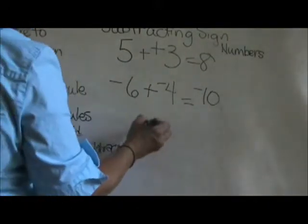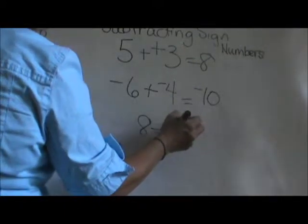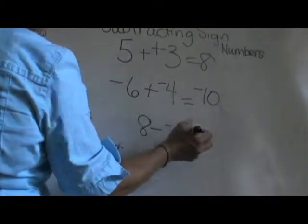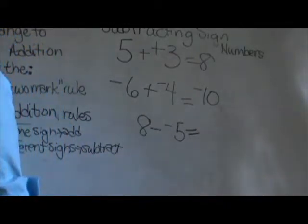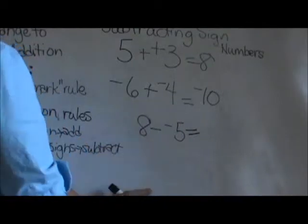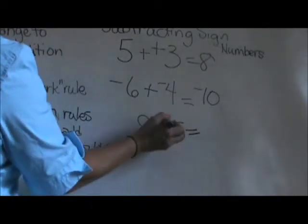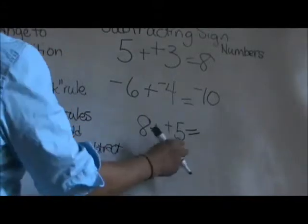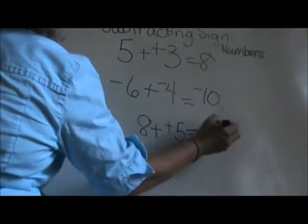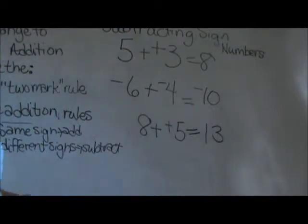Let me do one more example. 8 minus negative 5. Here is the last example. If I use the 2 mark rule, I don't change the sign of the 8. I go to subtraction. I make that plus and if I have made one mark, I have to make a second mark plus. Now they are the same sign so I just add. And that is how you do subtraction of signed numbers.